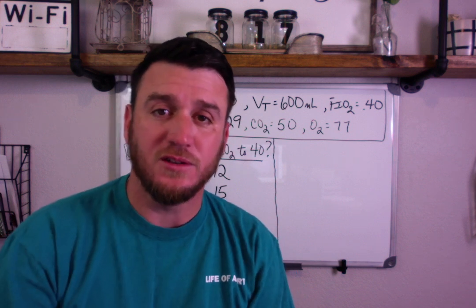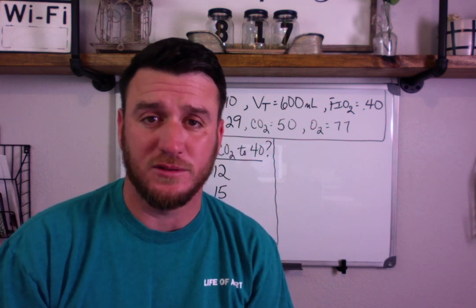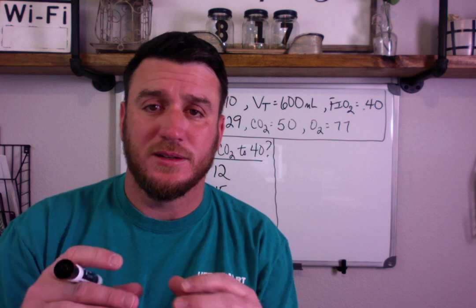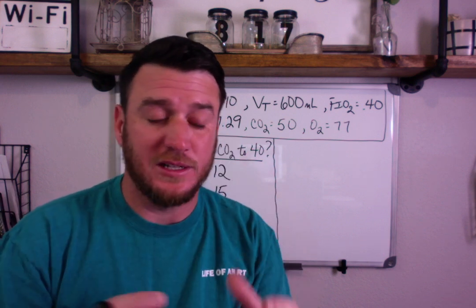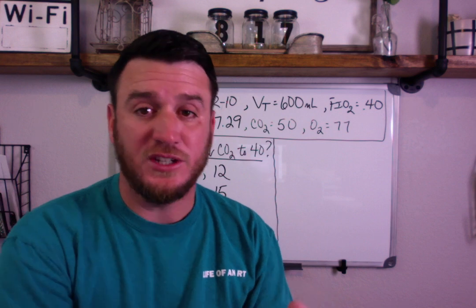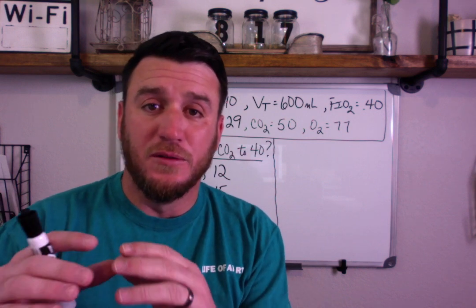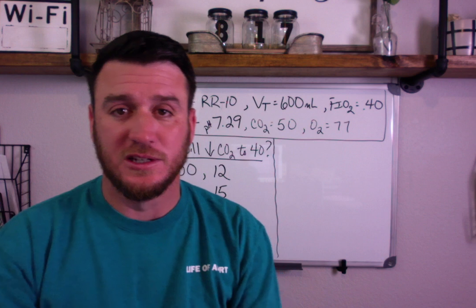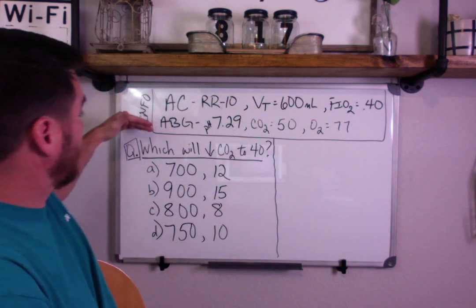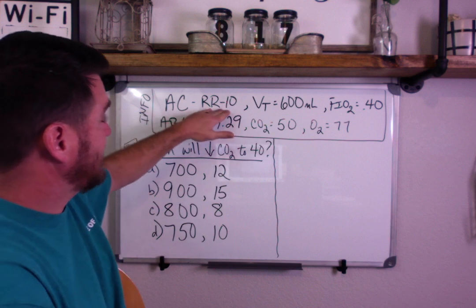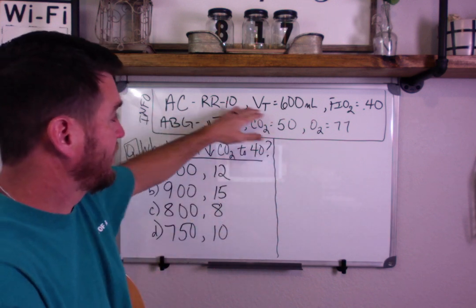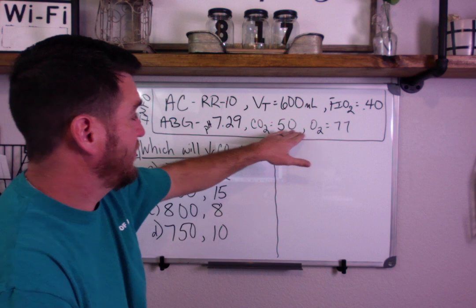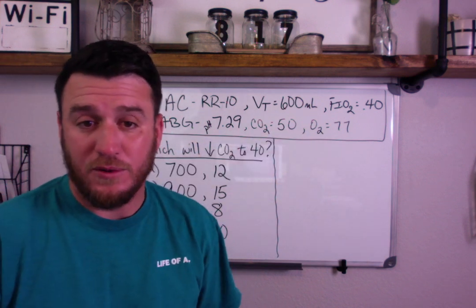So you can be prepared for this question when you take your TMC exam. The question basically talks about a patient paralyzed and being ventilated in volume control AC. They give you the vent settings and an ABG: rate of 10, tidal volume 600 mL, FiO2 of 40%. The ABG shows pH 7.29, CO2 of 50, and O2 of 77.